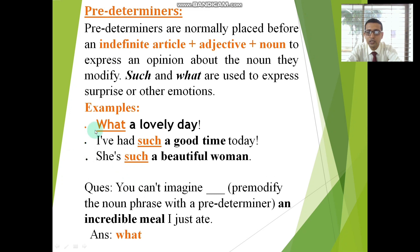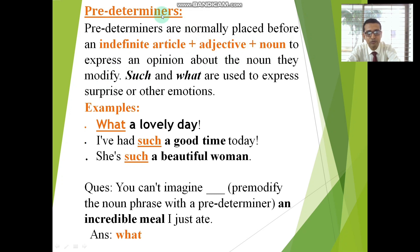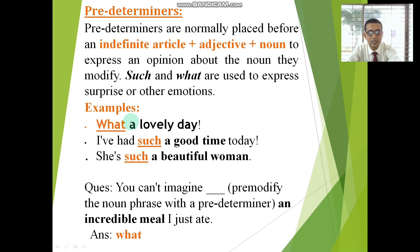Pre-determiners. Let's take a definition: pre-determiners are normally placed before an indefinite article, adjective, and noun — the pattern is: indefinite article + adjective + noun. They are used to express an opinion about the noun, to express surprise or other emotion. Example: 'What a lovely day.' Here, 'a' is the article, 'lovely' is the adjective, 'day' is the noun — and 'what,' placed just before this phrase, is used as a pre-determiner.